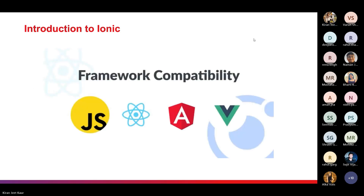Regarding framework compatibility: previous versions of Ionic were limited to Angular only, but after version 4, it targeted every JS framework — React, Vue, or Angular. Version 4 was built to work as a standalone web component library as well as with the latest JS frameworks. For each framework, there are different packages: Ionic/Angular for Angular, Ionic/React for React, and Ionic/Vue for Vue. You install the corresponding package and proceed with development using those components.